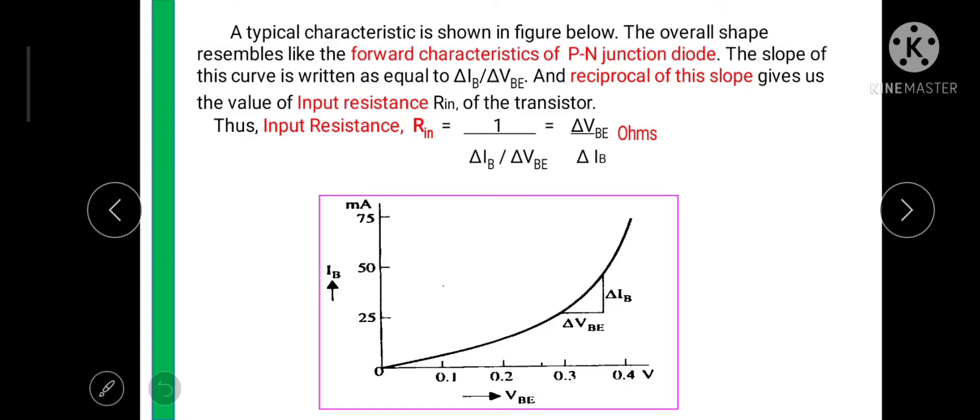A typical characteristic is shown in the below figure. As per our discussion the overall shape resembles like a forward characteristics of PN junction diode. So we can say that this characteristic shows the exact PN diode in forward bias. The overall shape of this characteristic is same exactly like PN diode in forward bias mode.